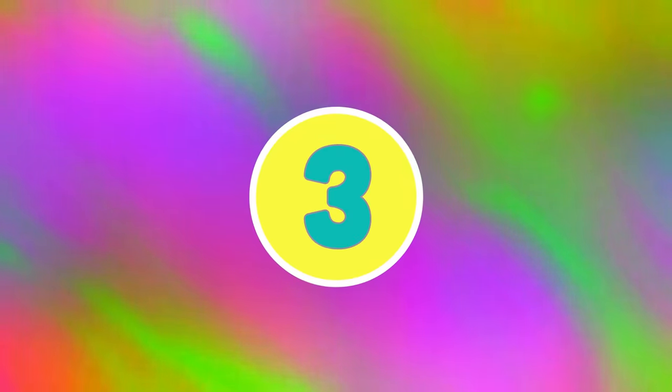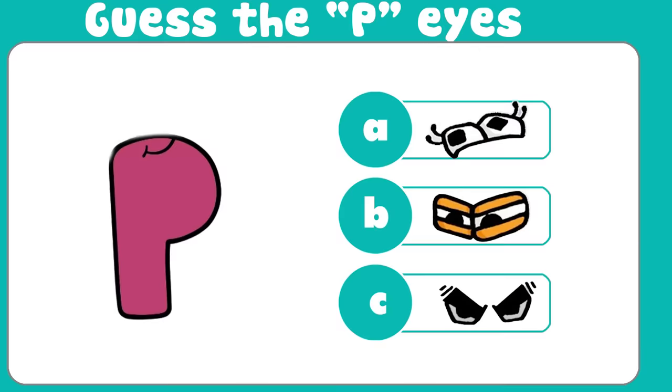Question 3. Guess the P alphabet. Lower eyes. You have three options.